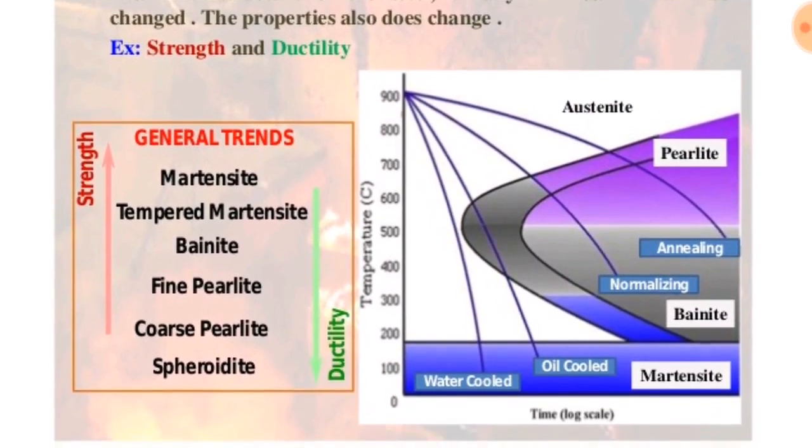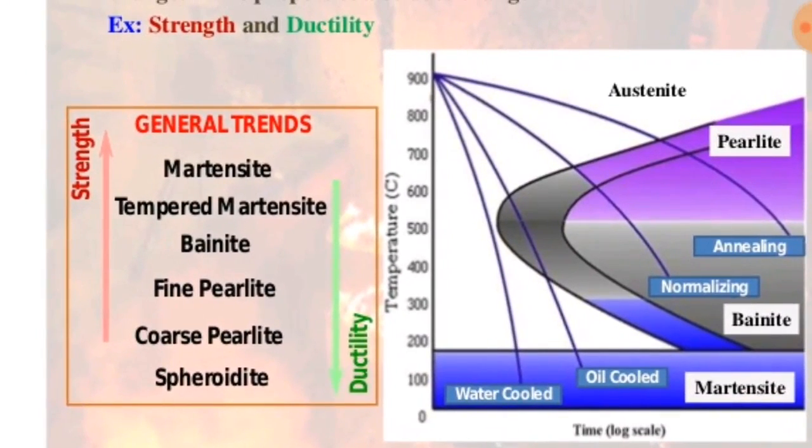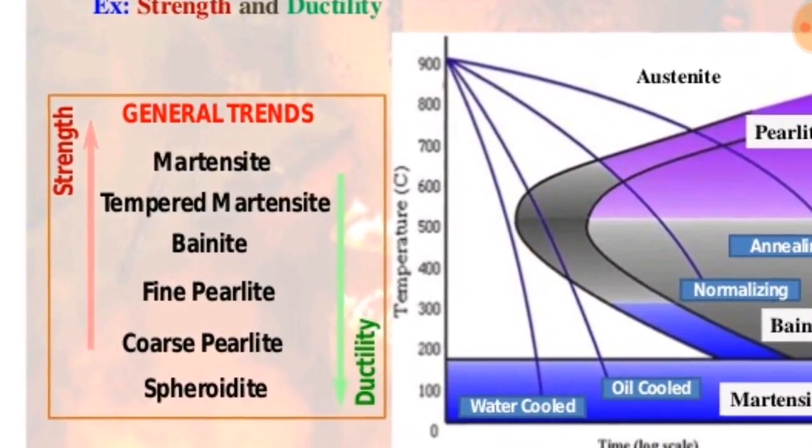Depending on the type of heat treatment and temperature, the final microstructure of the steel or any iron-carbon alloy will be changed. The properties also change.